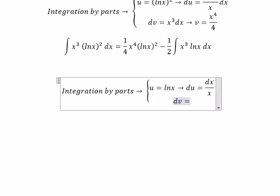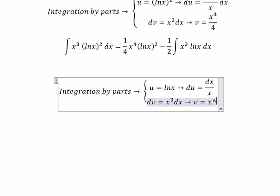dv, we got x to the power of 3 dx. So you got v equal to x to the power of 4 over 4.